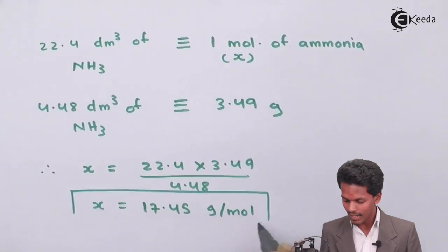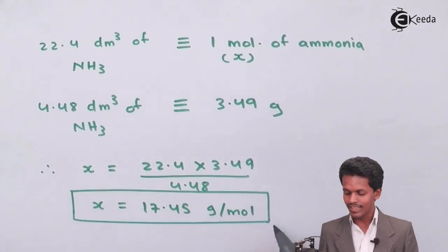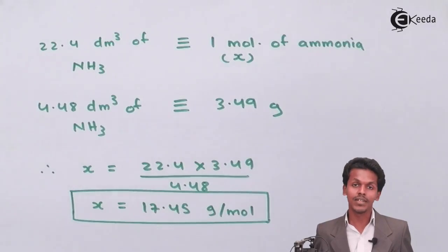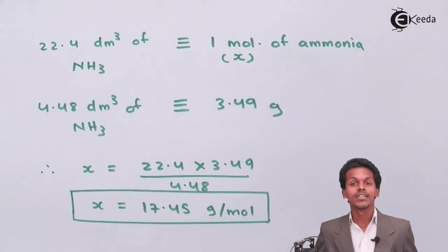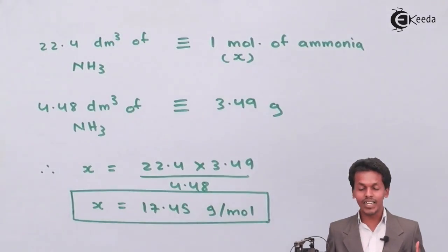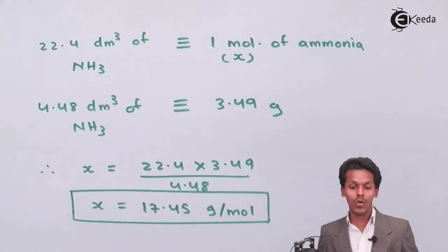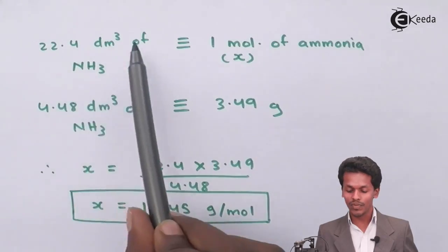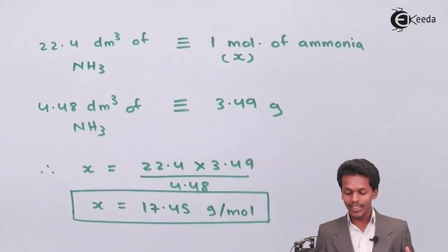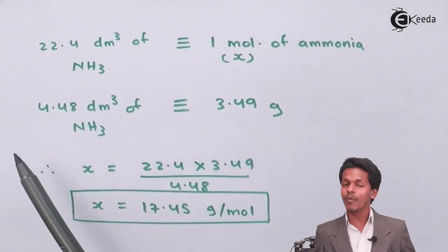This is how we calculated that the molar mass of ammonia will be 17.45. This is how we have related from Avogadro's law that 22.4 dm³ of ammonia will occupy one mole of ammonia, while in this case what they have provided us is 4.48 dm³ of ammonia.